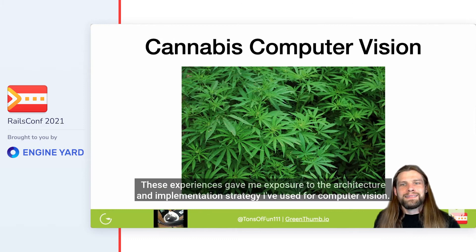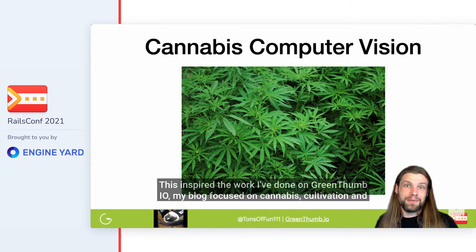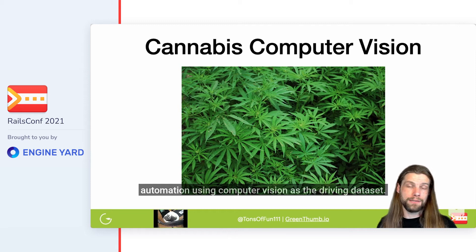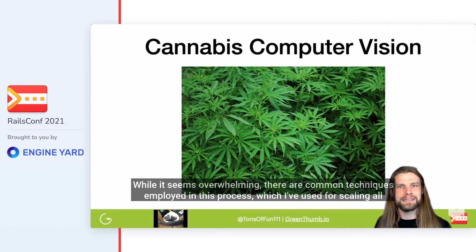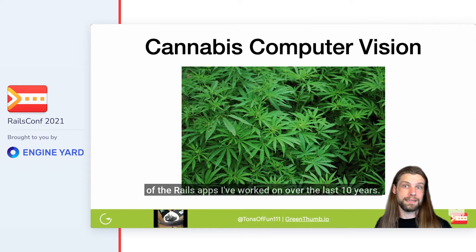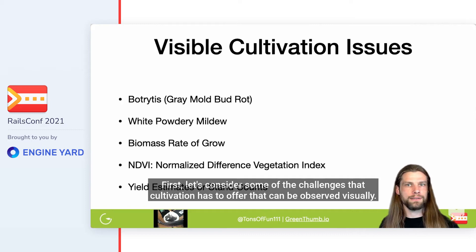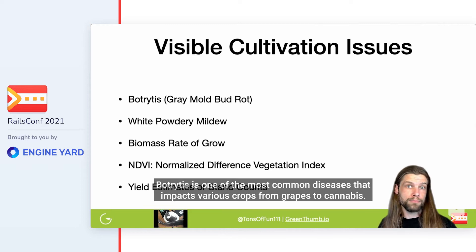These experiences gave me exposure to the architecture and implementation strategy I've used for computer vision. This inspired the work I've done on GreenThumb.io, my blog focused on cannabis cultivation and automation using computer vision as the driving dataset. There are common techniques employed in this process which I've used for scaling all of the Rails apps I've worked on over the last 10 years. First, let's consider some of the challenges that cultivation has to offer that can be observed visually.